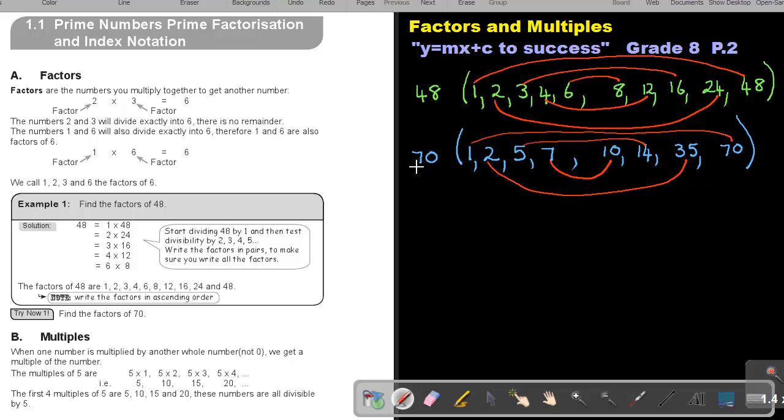So, the factors of 70 will be 1, 2, 5, 7, 10, 14, 35, as well as 70. I am going to end this part 1 by just quickly explaining to you multiples.